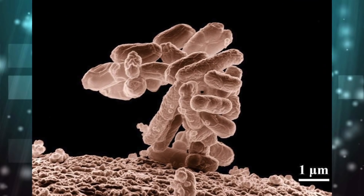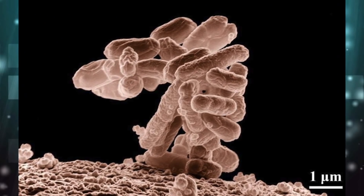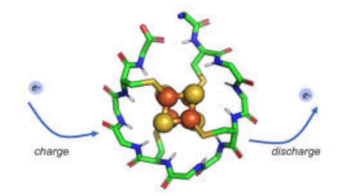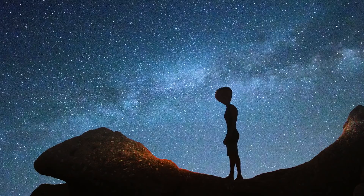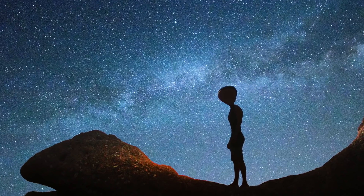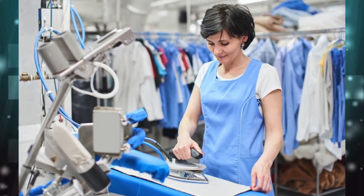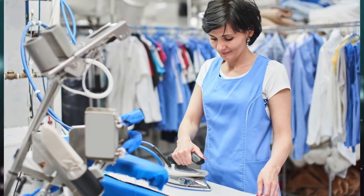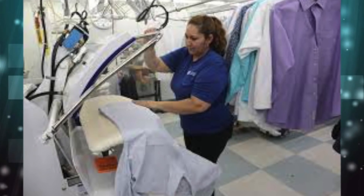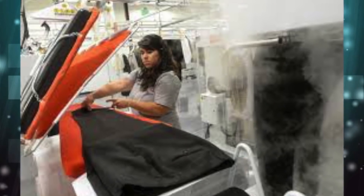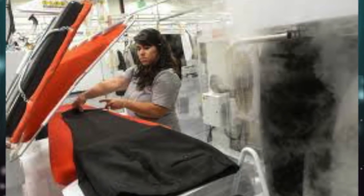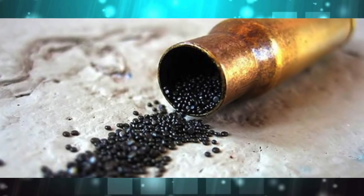Who invented the microscope? The main hobby of Dutchman Antony van Leeuwenhoek (1632 to 1723), born in a lower middle class family in Holland, was to shape lenses by grinding himself and observe things through them. This pastime led to the invention of the microscope.